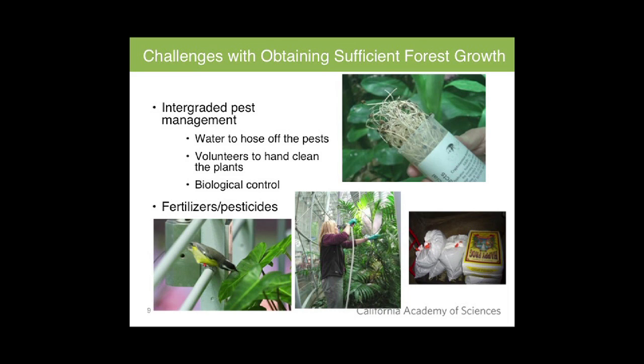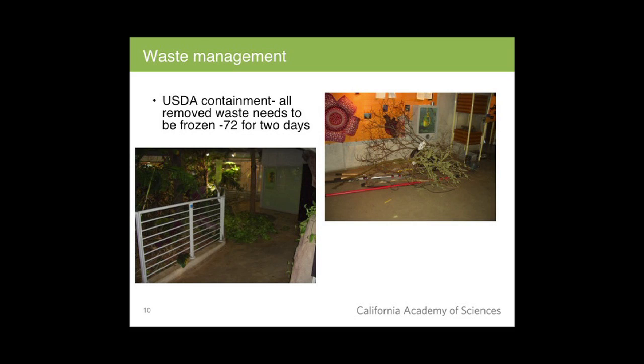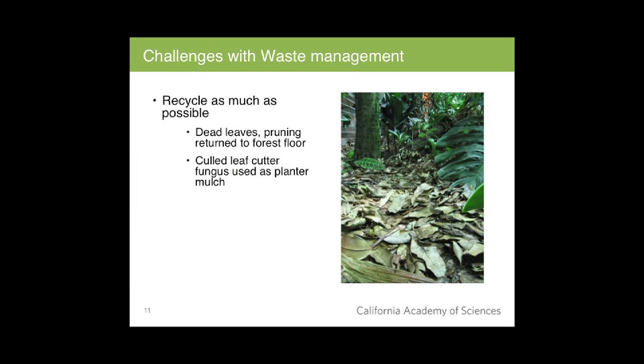Because of the free-flight butterflies and the leafcutter ants, the bola is a USDA containment facility, so all waste must be disinfected before removal. We disinfect by freezing at minus 72 degrees for two days, so anything organic leaving must go through that process. Due to limited freezer space, we try to recycle as much as possible: all dead leaves and prunings are returned to the forest floor for decomposition, and the leafcutter ant fungus is used as mulch, minimizing our need for fertilizers. About 75% of all waste generated within the bola is recycled.